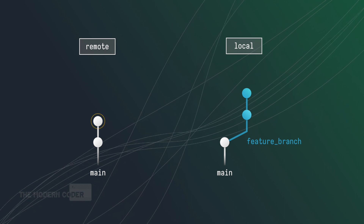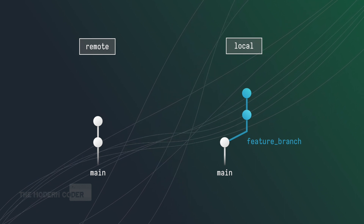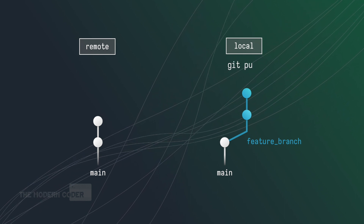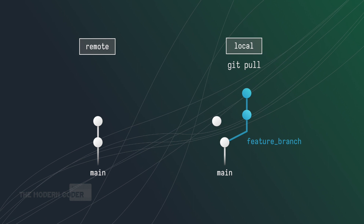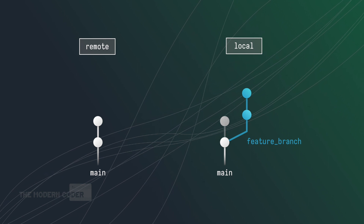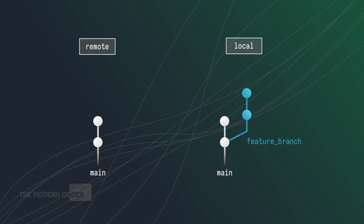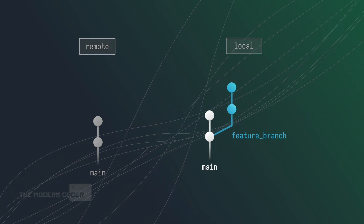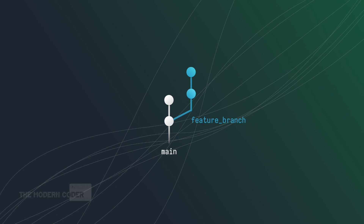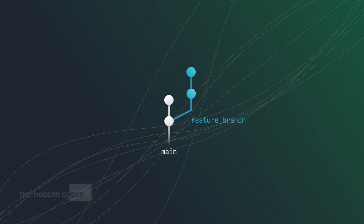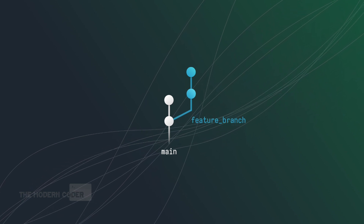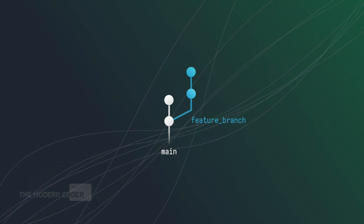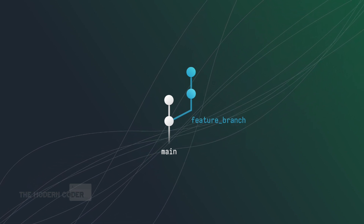Naturally, before we do anything we want to grab that change, so I'll run git pull. But now that I've got that latest commit back on my local mainline, the situation becomes a little more complex. How do we get our feature branch changes back onto mainline while accounting for this other commit?